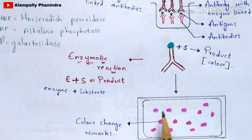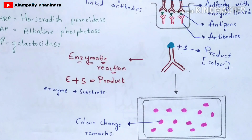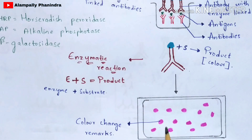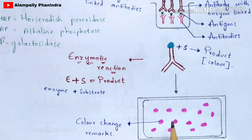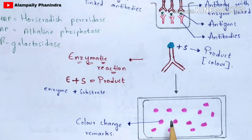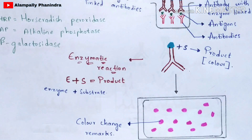By observing this color change, we can determine that antibodies are present in the serum. If antibodies are present, color change is visualized. If antibodies are absent, no color change is obtained. This is the basic ELISA test. Now let us discuss the types of ELISA.